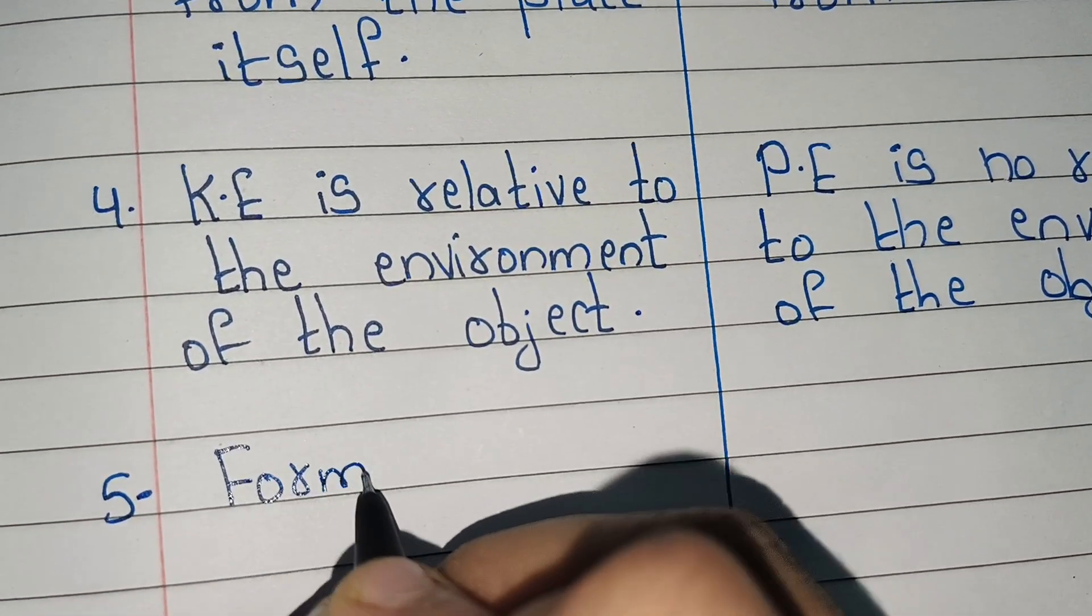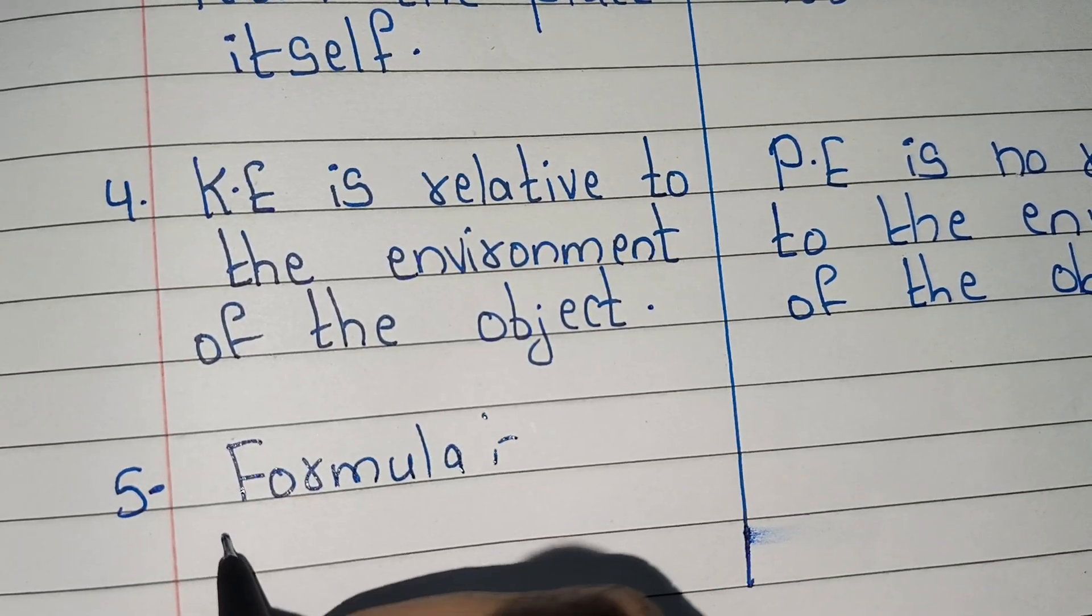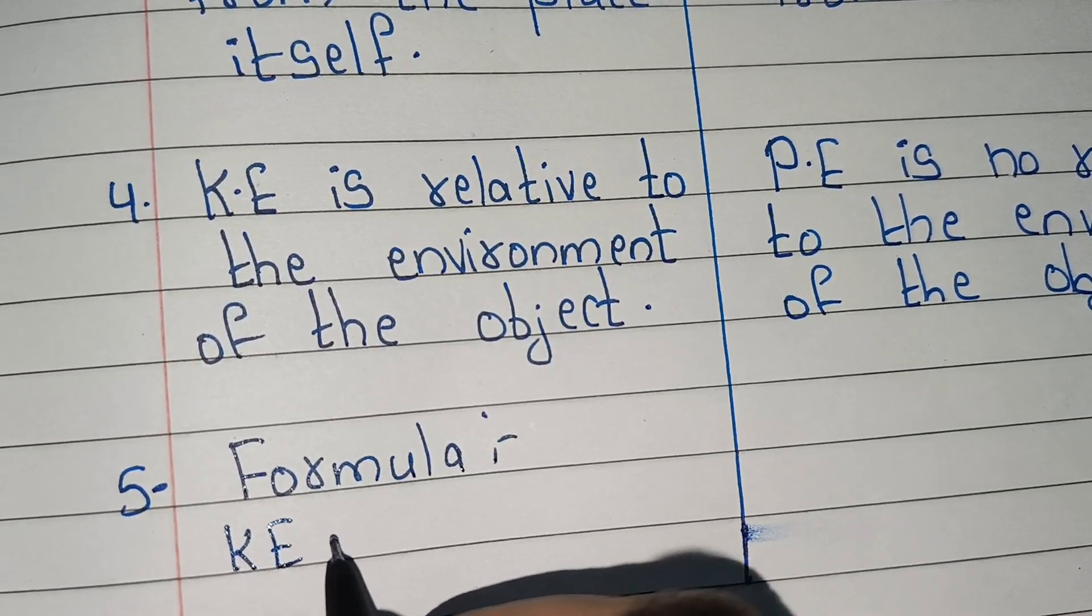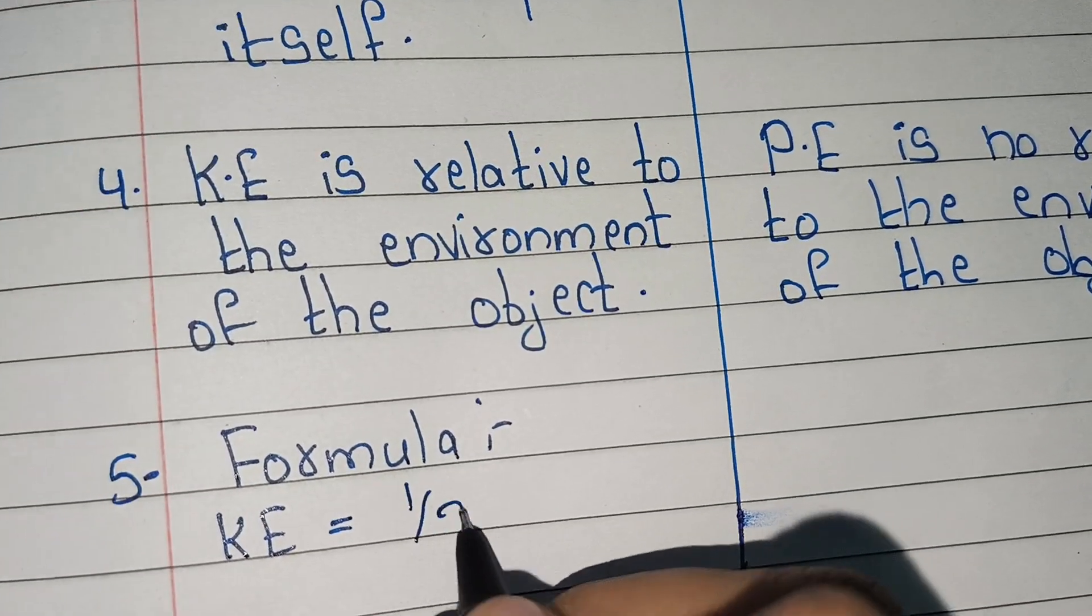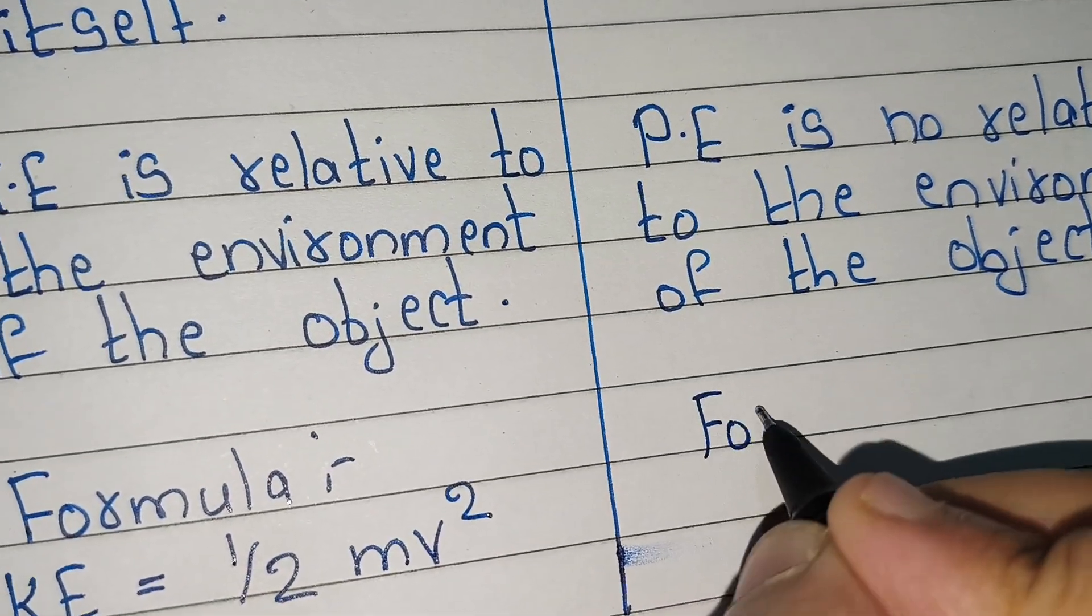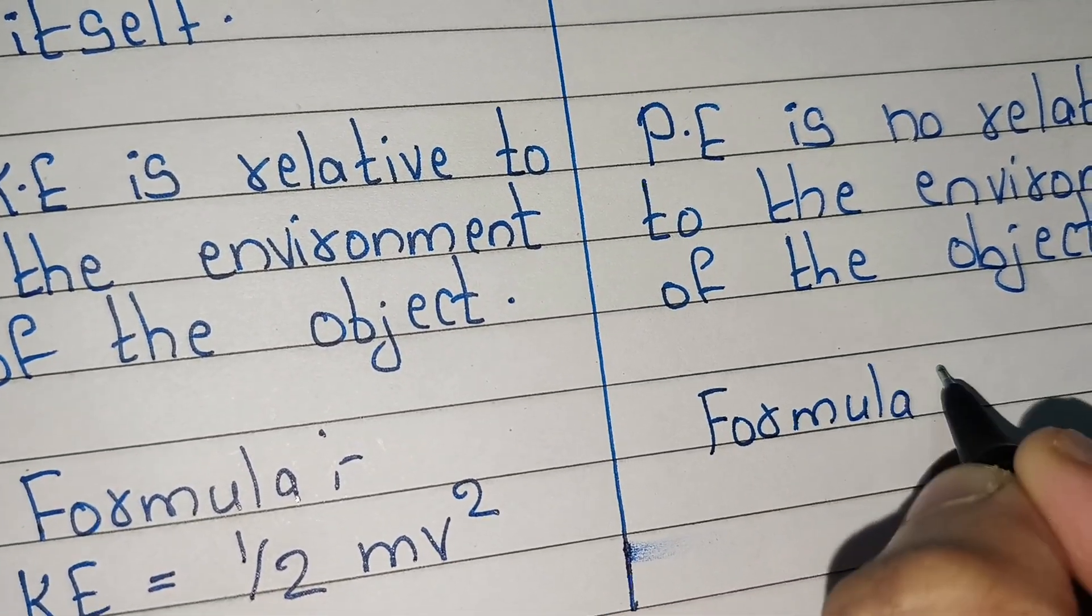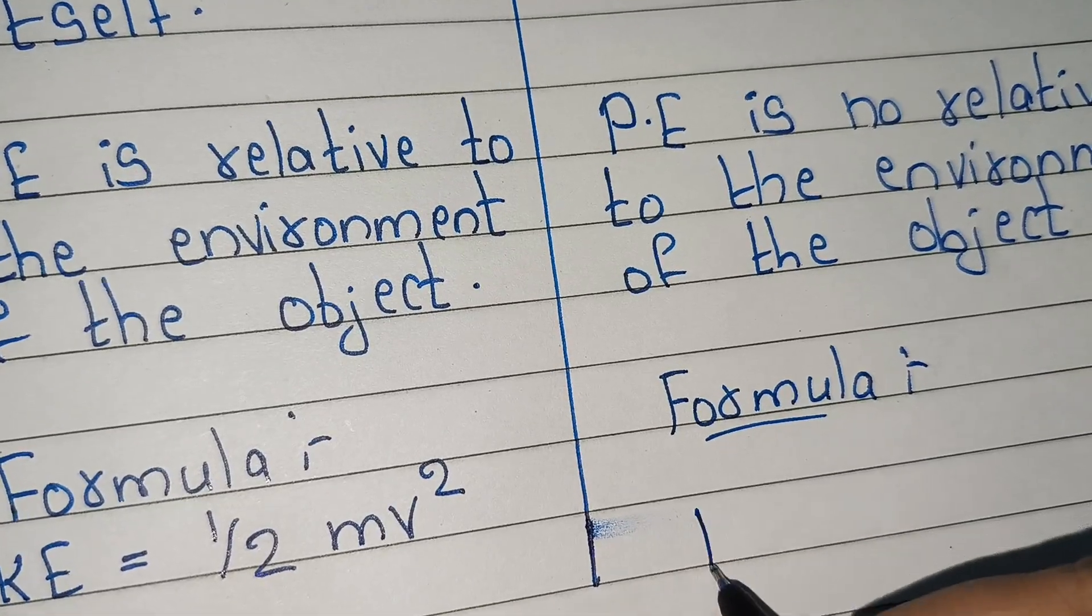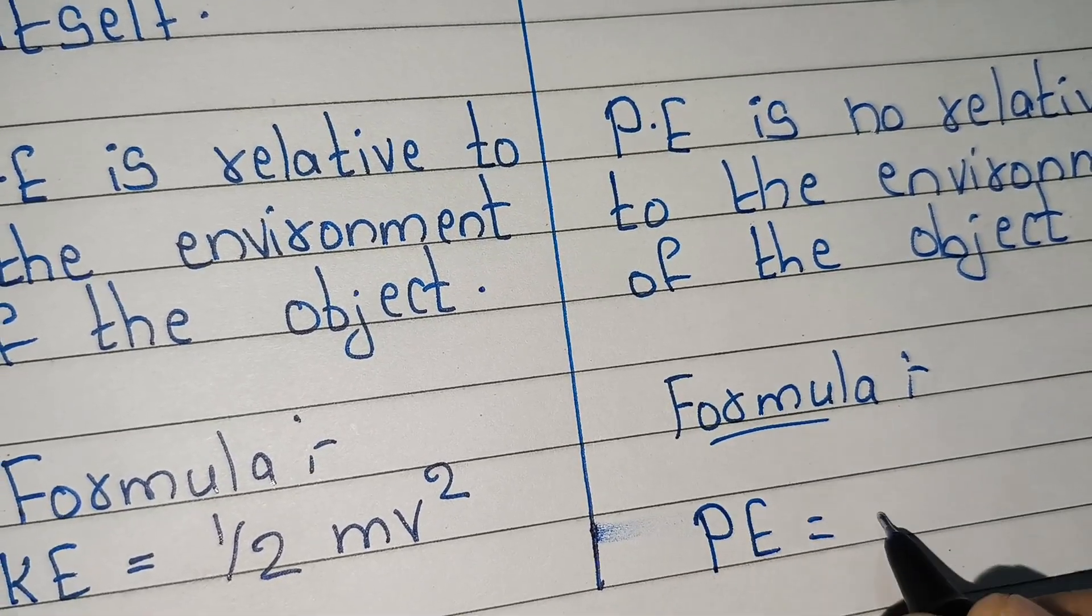Point number five. Formula of kinetic energy: KE equals half mv squared. Formula of potential energy: PE equals mgh.